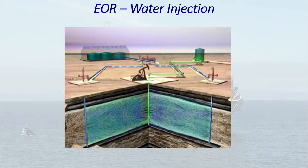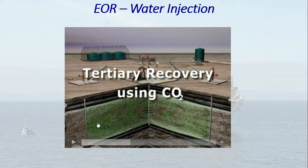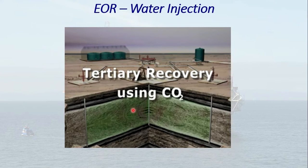The blue color coming out is the water. These are the two water injection wells — one and two. The water injection has done its job; the pressurized water builds up pressure in the reservoir and pushes the hydrocarbons out. This is how water injection takes place.